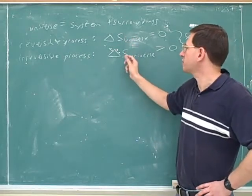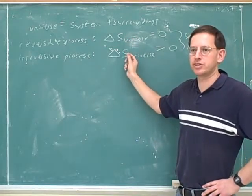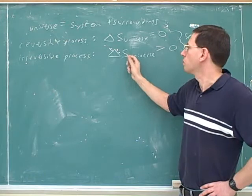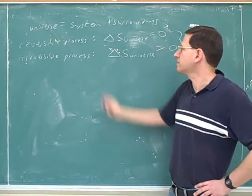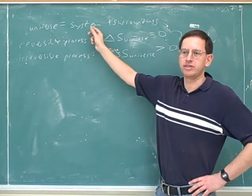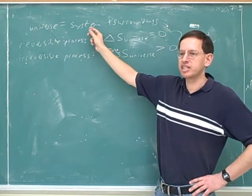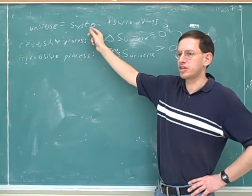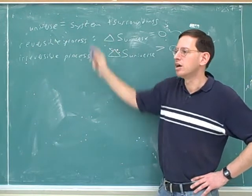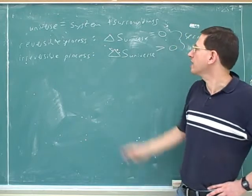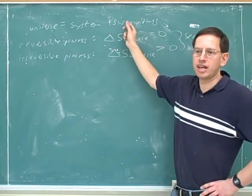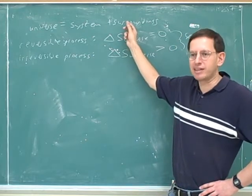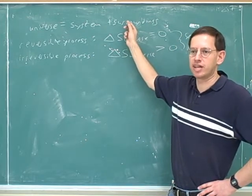Notice that the second law is just telling us about the entropy of the universe. We're not saying that the system's entropy can't go down. It's possible that the system's entropy could go down, but only if the surrounding's entropy goes up by at least as much.